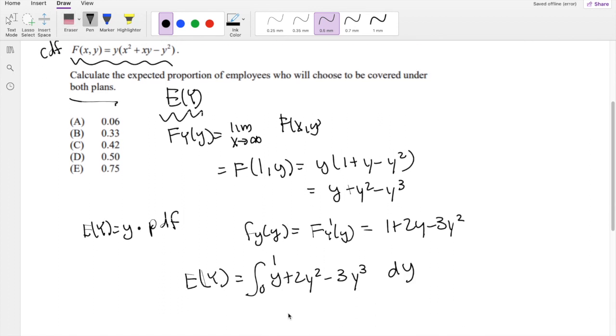So this is equal to Y² over 2, plus Y³ times 2/3, minus Y⁴ times 3/4, evaluated from 0 to 1. So this is equal to 5 over 12, which is also equal to 0.41667, which is approximately equal to 0.42, our answer C.